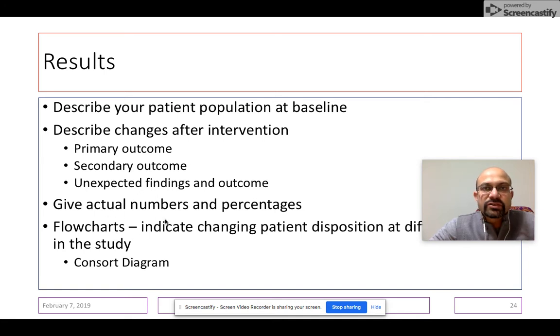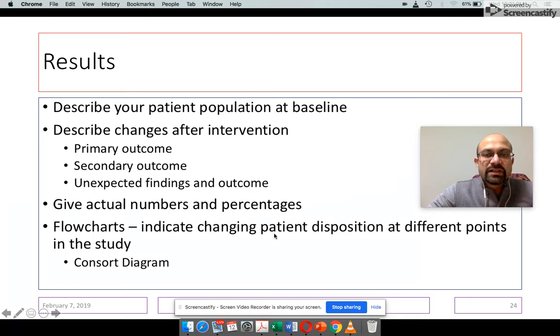It's best to give the actual numbers and percentages in the results section and you show flow charts which indicate the changing patient disposition at different points in the study. The flow charts are a good way of presenting information and a good thought in this part is the consort diagram.